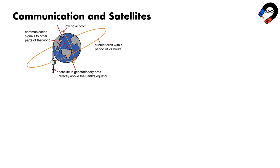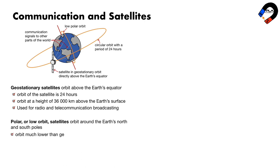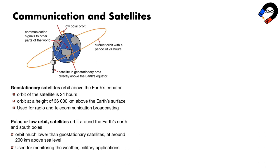Communications with satellites. Geostationary and polar orbiting satellites are both used for communication. Geostationary satellites orbit above the Earth's equator with an orbital period of 24 hours, at a height of 36,000 km, used for radio and telecommunication broadcasting around the world. Polar (low orbit) satellites orbit around the Earth's north and south poles at around 200 km above sea level. They are used for monitoring weather, military applications, and imaging the Earth's surface. They have shorter signal time delays and clearer signals, but require multiple satellites for continuous operation.